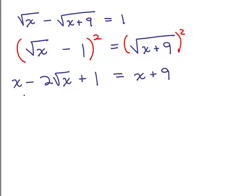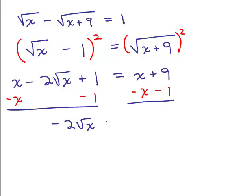So there's still a square root in here, so now we need to isolate that next square root. For the moment, I'll just leave the negative 2 square roots of x on the left-hand side of the equation, but let's subtract x and subtract 1 from both sides. So I have negative 2 square roots of x equals 9 minus 1 is 8.